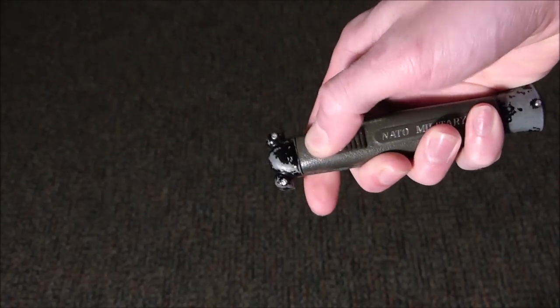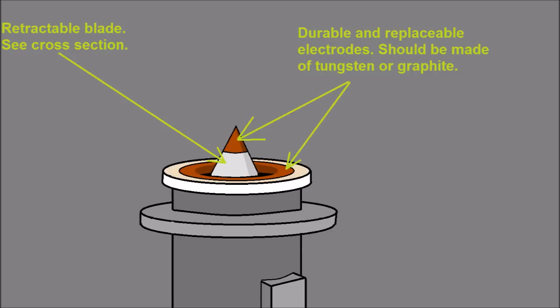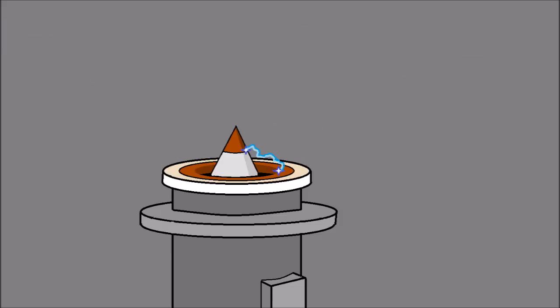There is a tungsten or graphite electrode at the tip of the retractable blade and a ring-shaped electrode in the handle at the base of the blade. When the blade is extended to the open position, the two electrodes pass very close to each other as the tip is just coming out of the handle. At the same time, the high voltage power supply is activated and an electric arc is ignited between the two electrodes.